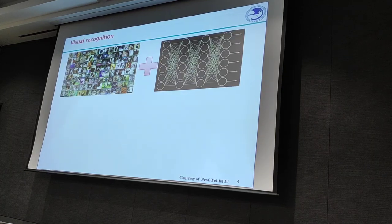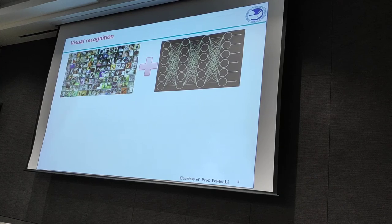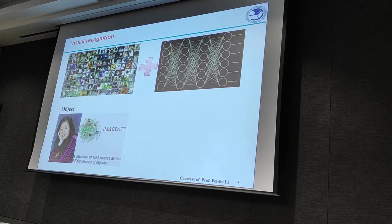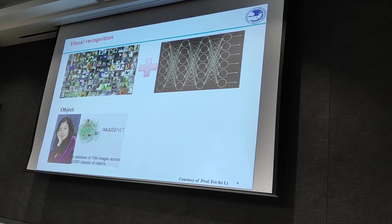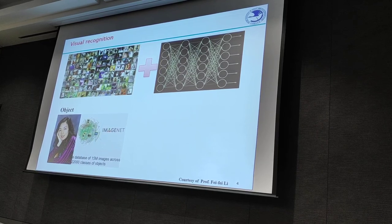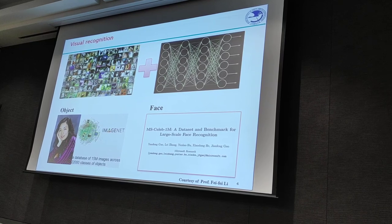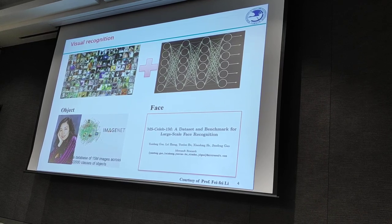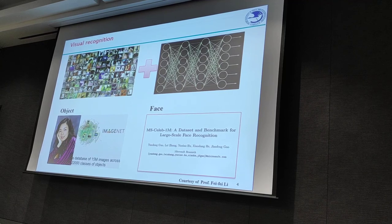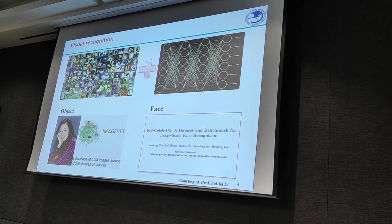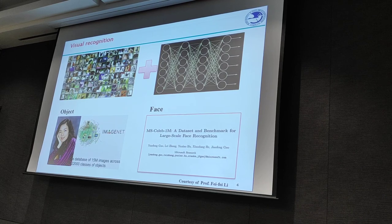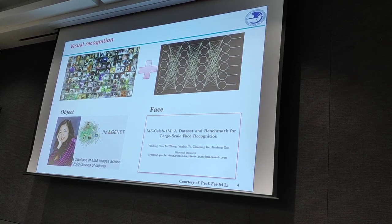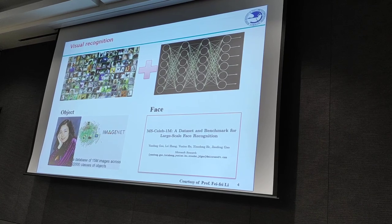Currently, the mainstream methodology is to use big data to train recognition models. For example, in 2009, the ImageNet project delivered a database of 15 million images across 22,000 classes of objects organized by everyday English words. Raised by Dr. Zhang and Dr. Bo, the Microsoft Celebrity database has over 5 million images of 100,000 celebrities — the ImageNet of the facial recognition community. The whole research community benefits from this publicly available database.